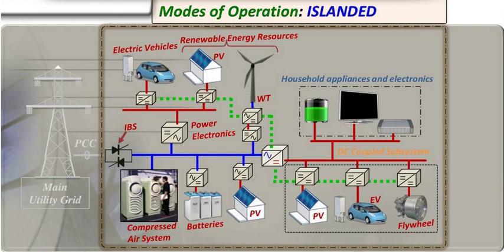Islanding operations, also known as island mode or an islanded grid, occur when a portion of the electrical system continues to operate in isolation from the main grid due to a grid disturbance or a fault in the main grid. This typically happens when there is a sudden loss of grid connectivity due to a fault, maintenance, or a natural disaster, and certain localized areas still have power generation sources available.